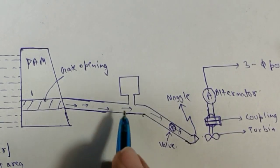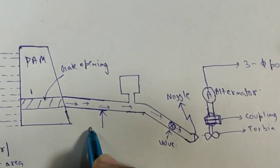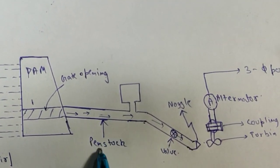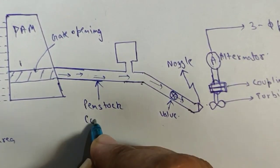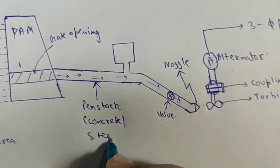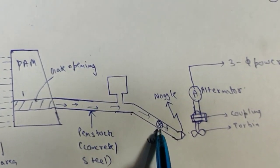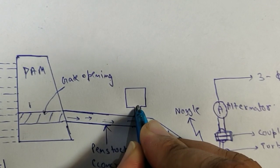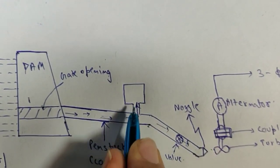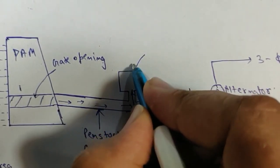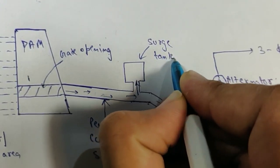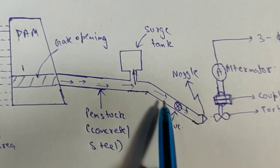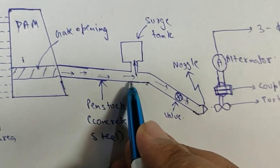Suppose I close the valve suddenly. Then the pressure in the pipeline — this pipeline is called our penstock, which is made of concrete or steel — increases very rapidly. This can damage the penstock. So to decrease the pressure when the valve is closed suddenly, we connect a surge tank. The basic function of the surge tank is to maintain the pressure in the penstock. When the valve is closed suddenly, some water flows into the surge tank so the pressure does not increase and the penstock is not damaged.